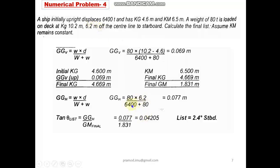Tan θ is nothing but GGh / GM final. So if you take the ratio you will get this value, so correspondingly θ we can find out as 2.4 degrees. Because the loading has happened to the starboard, the list will also be to starboard.